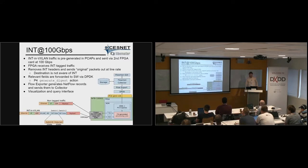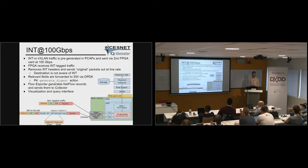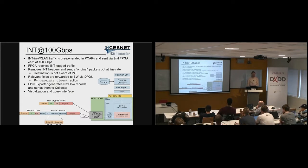What we did was pre-generate the INT traffic, because we don't have 100-gig switches capable of INT. We pre-generated the traffic into PCAPs and sent the files through another FPGA — the second card — at a speed close to 100 gigabits per second. The primary FPGA does a couple of things: first, it receives the INT traffic, and then it removes the INT-related headers from the packets via a P4 program. The original packets, without any INT-related headers, are sent out from the card so that the true destination never knows that INT was going on, and is not slowed down by INT analysis or removal.